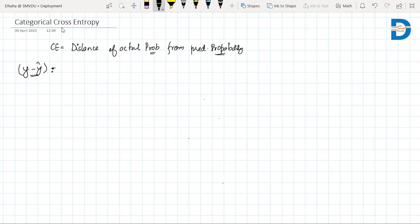So what do we do in categorical cross entropy? Generally, categorical cross entropy is used for multi-class classification problems. Wherever you have more than two classes, you use categorical cross entropy.